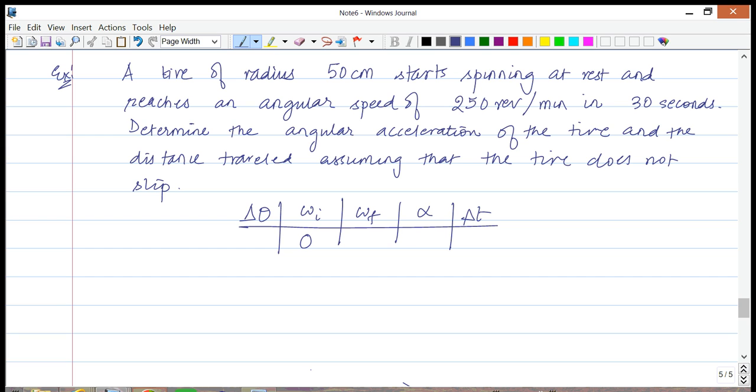Now what we need to do is convert the 250 revolutions per minute to radians per second. One revolution is 2π radians, so multiply that by 2π, and one minute has 60 seconds in it. So this is simply equal to 500π divided by 60.